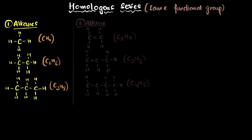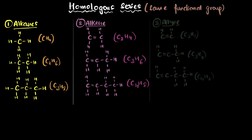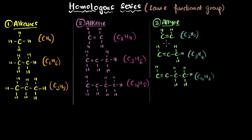Similarly, if you look at all the alkenes, all the alkenes have one double bond — that's their functional group. Same functional group, so they belong to the same homologous series. Same is the case with the alkynes. They have one triple bond, same functional group for all these members, so they're all part of the same homologous series.